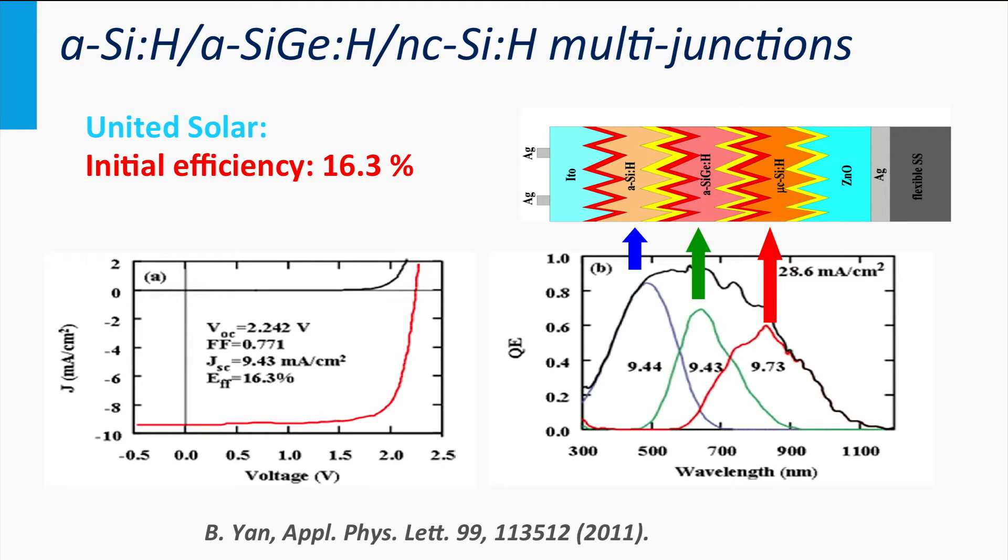In this figure, you see the EQE of the three PIN junctions of a record triple junction of United Solar. As you can see, the individual cells have various overlaps. They don't look like the block functions as we have seen for the 3-5 technologies. The light with wavelengths below 450 nm are utilized by the top cell only. Wavelengths at 550 nm are utilized by the top cell and middle cell. Wavelengths at 650 nm are utilized by all three junctions. Wavelengths above 900 nm are only utilized by the bottom cell.